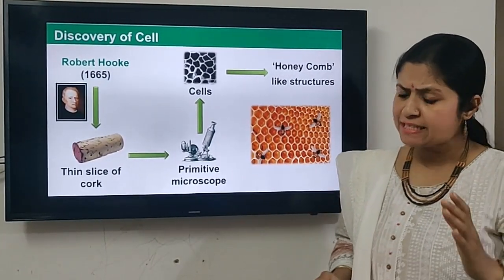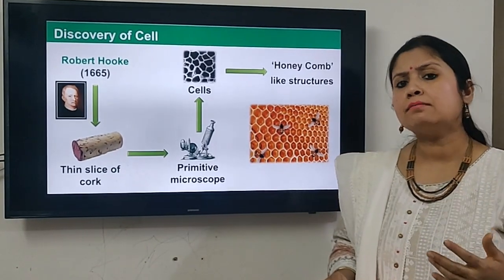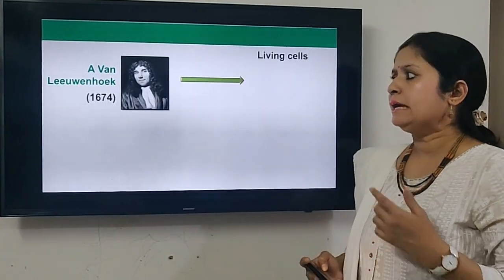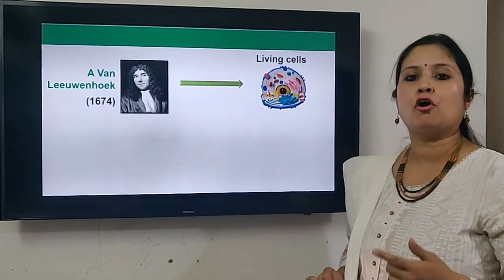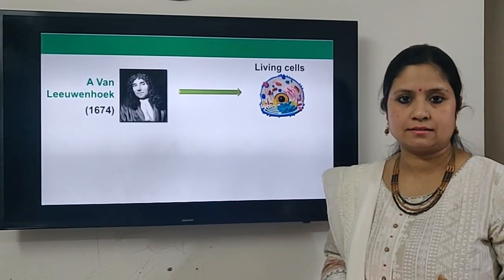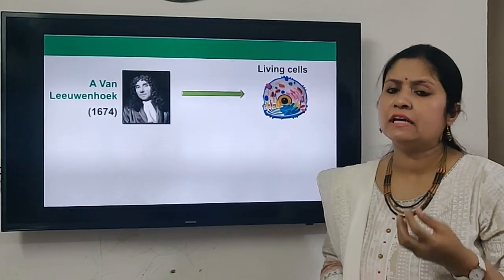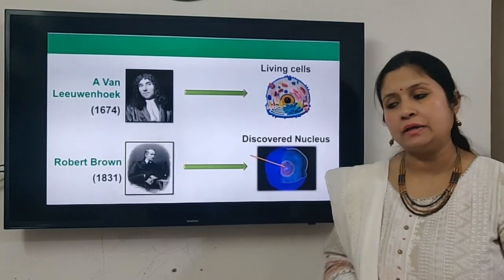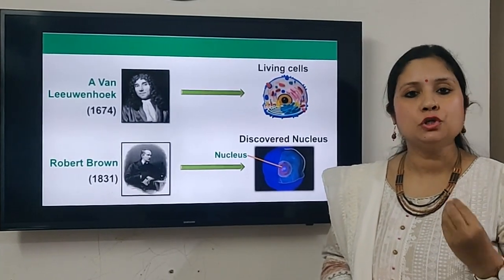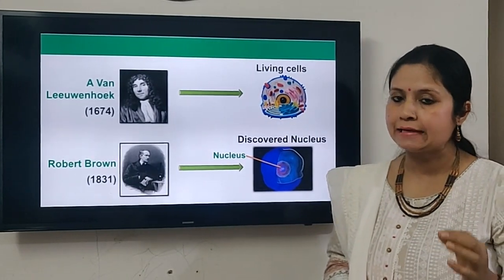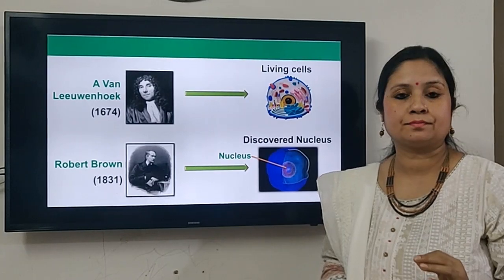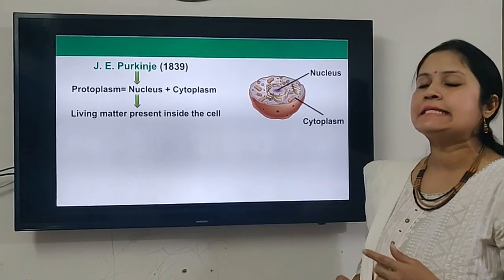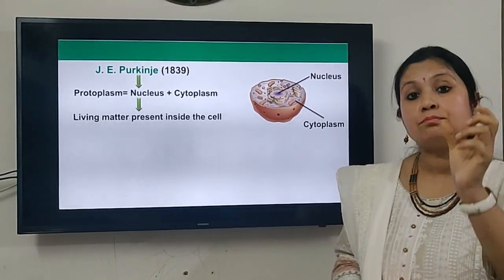With the development of the microscope, scientists were able to discuss various characteristics of cells. In 1674, Anton van Leeuwenhoek discovered living cells by studying a sample of pond water. Later, Robert Brown in 1831 discovered the nucleus. Then J.E. Purkinje in 1839 gave the term protoplasm.